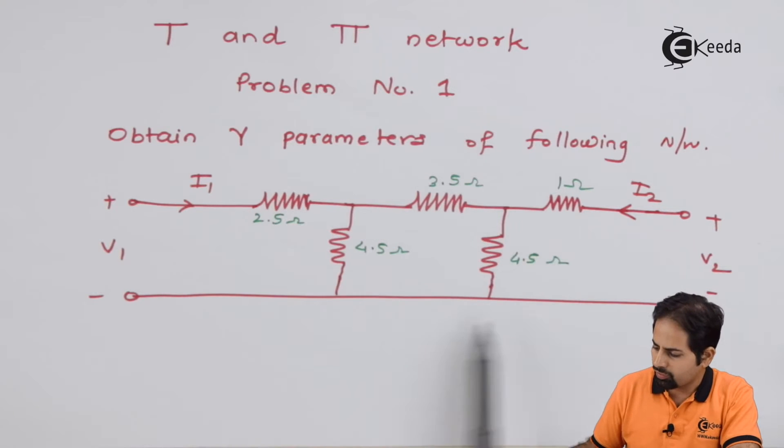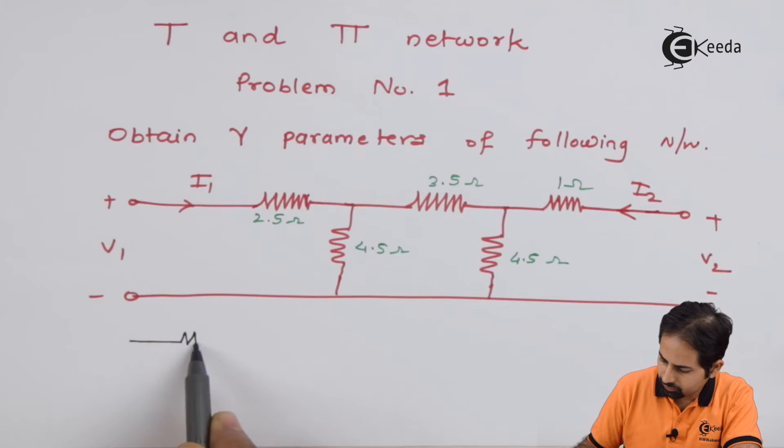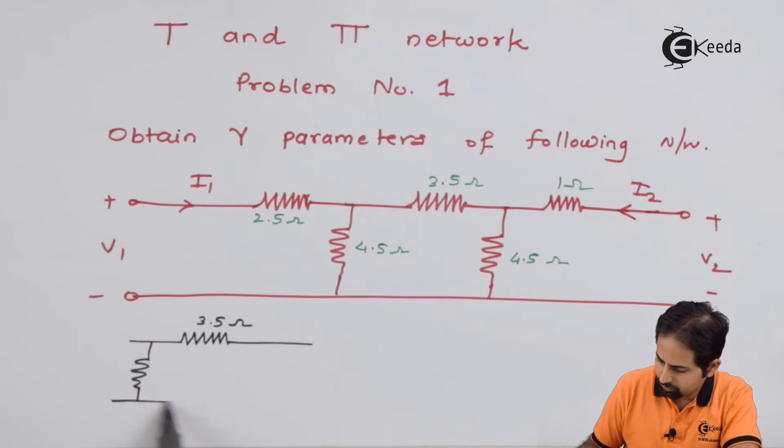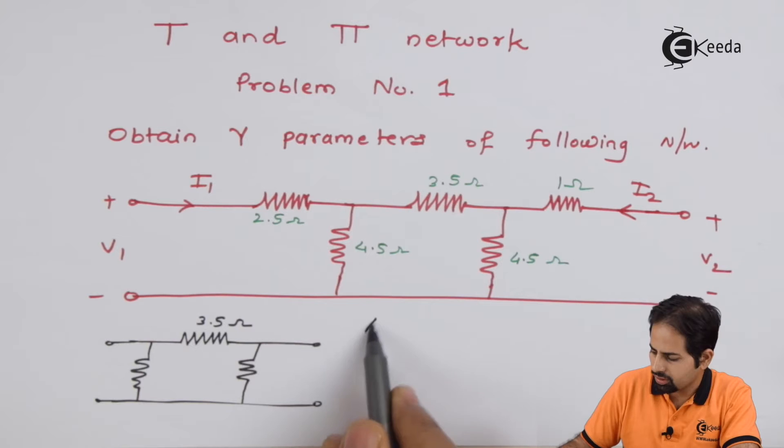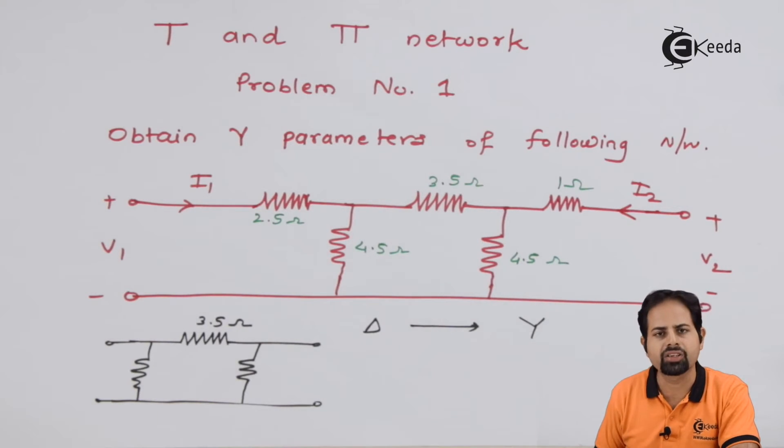So what we will do in the first step, we will convert this delta into star. So this is the delta connection and we have to convert this into a star connection.